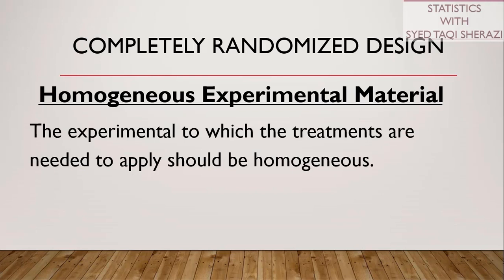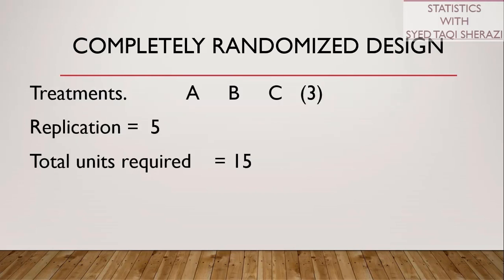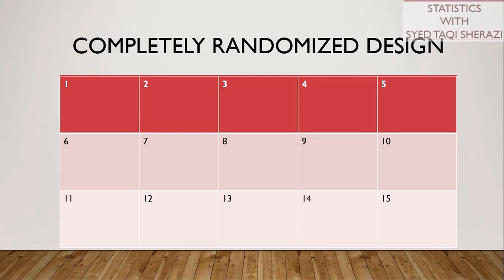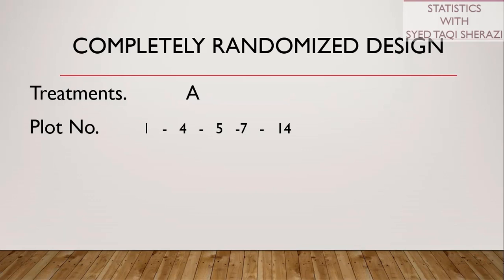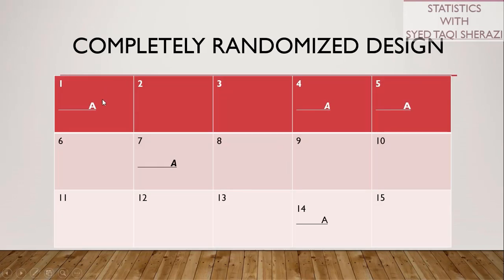Suppose we have three treatments A, B, and C, and each treatment will be replicated five times. We must have 15 plots to apply these three treatments with five replications each. Here are 15 plots, all labeled. Using a lottery method for randomization, the plots assigned to treatment A are the 1st, 4th, 5th, 7th, and 14th plots. Similarly, plots are assigned to treatments B and C as well.